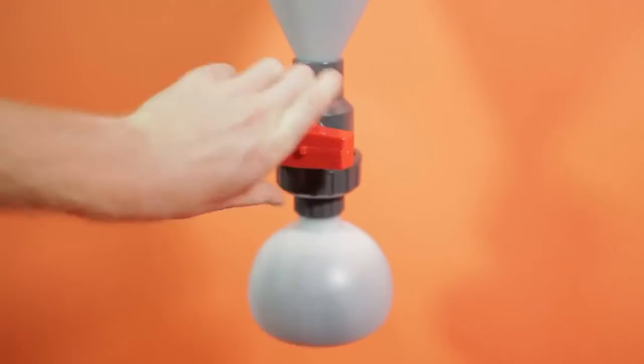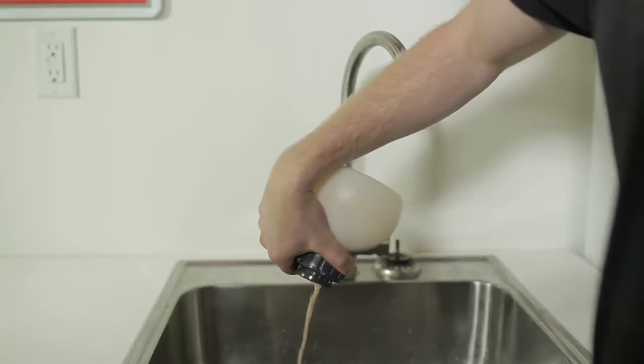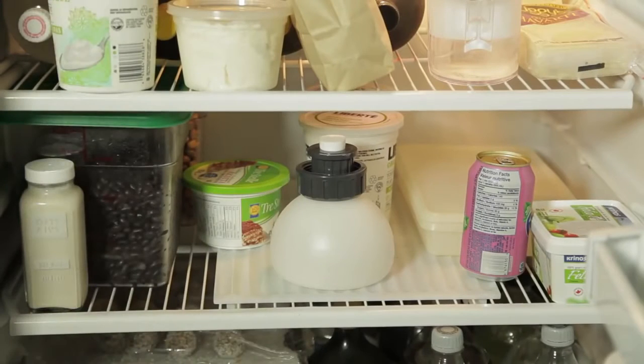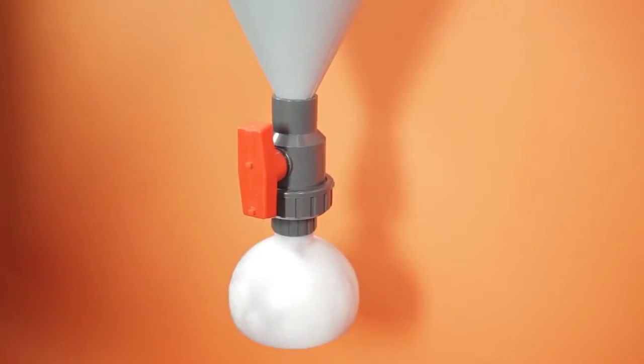When primary fermentation is complete the valve is turned off, the collection ball is removed then emptied and cleaned, or the yeast can be harvested and saved for reuse. Then the collection ball is reattached and the valve is opened for secondary fermentation.